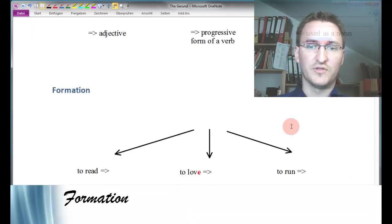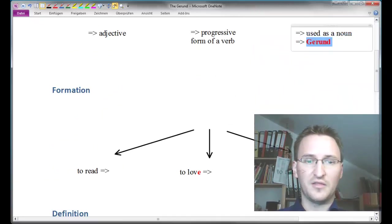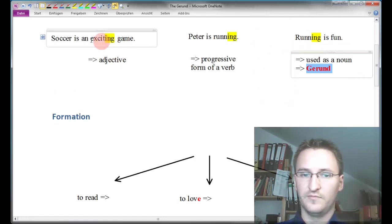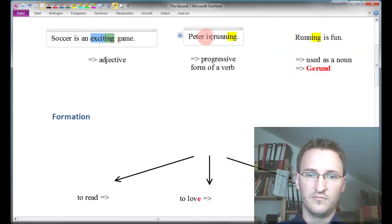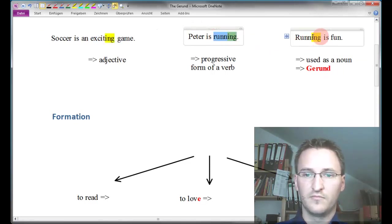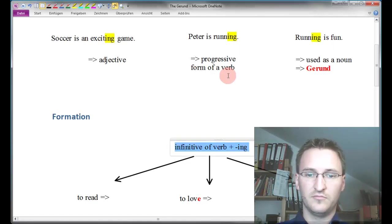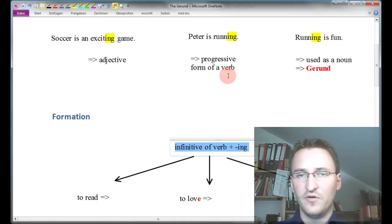Let's take a look at the formation of the gerund. This is really easy, so you can easily think for yourself. All these forms are built in the same way, and it's a really easy principle. It's simply the infinitive of a verb plus an ING form.